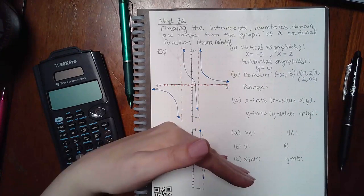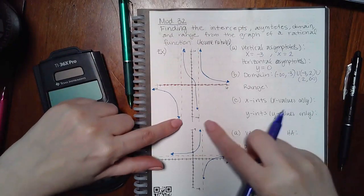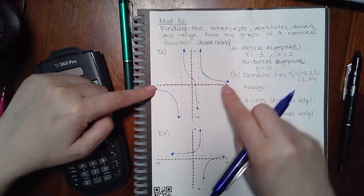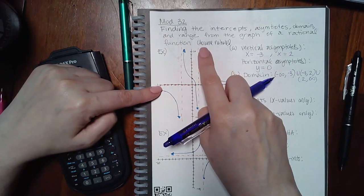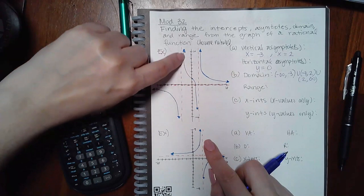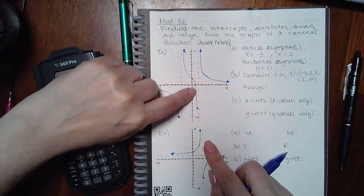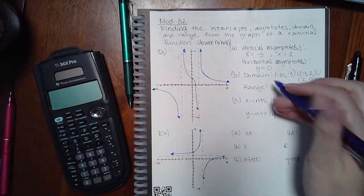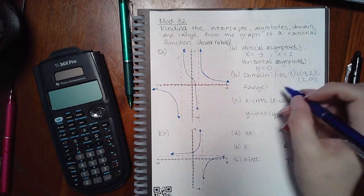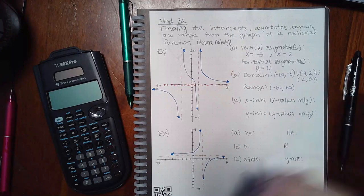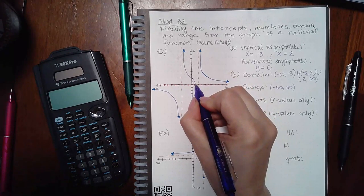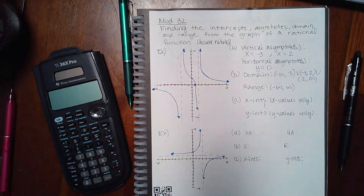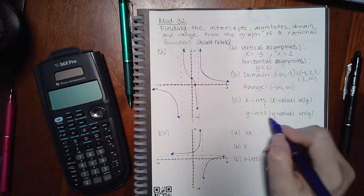Now the range is the lowest y value to the highest y value. Even though the outer two pieces have a gap, going from negative infinity to zero and zero to positive infinity, the middle part does not have a break — it consistently has y values from negative infinity all the way up to positive infinity. That overrides the gap in the other two pieces, so the range is negative infinity to infinity. The x-intercept is at positive one, and the y-intercept is at positive two.